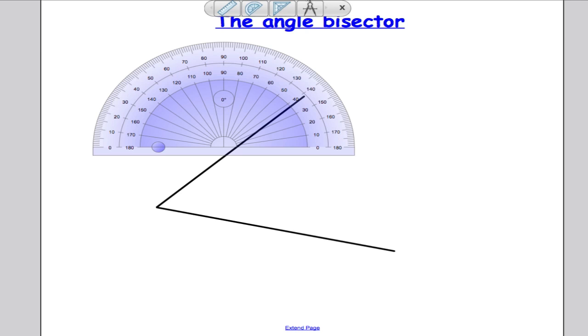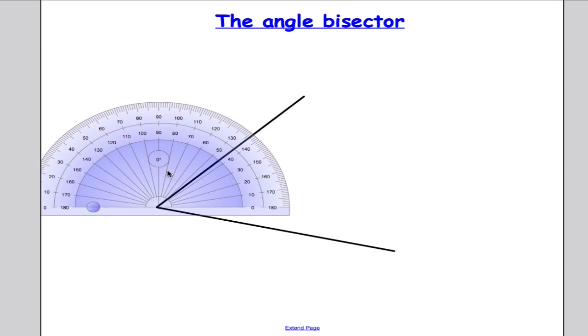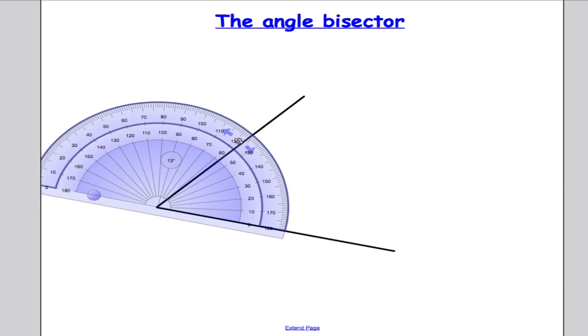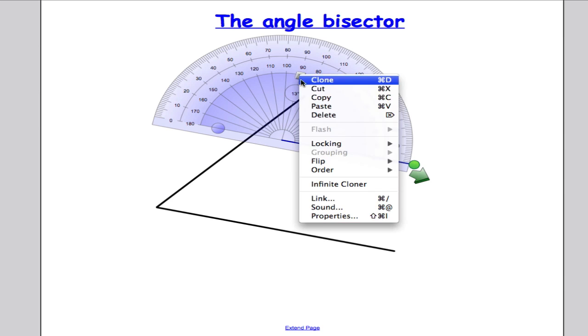I'm just going to start by measuring the angle just to see roughly how big it is and what we're dealing with. So if I use my protractor here, I make it that this angle is roughly around 56 degrees. When we're finished, we should get an angle of around 28 degrees on both sides, so let's see how it goes.